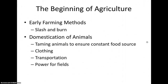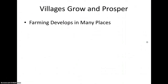Slash and burn farming was an early farming method, conducted when farmers would clear land by cutting and burning trees, then move to a new area after a year or two. The domestication of animals — the taming of wild animals — ensured a constant food source, with advantages including food, clothing and shelter, transportation, and power for plowing. Hunters and farmers had tamed horses, dogs, goats, and pigs. Farming had developed in many places, including Africa, China, Mexico, Central America, and Peru, with different crops developing in different areas.